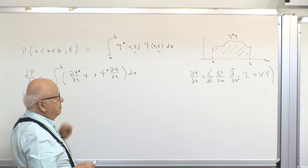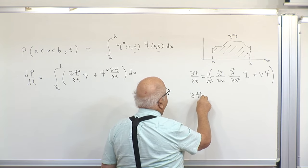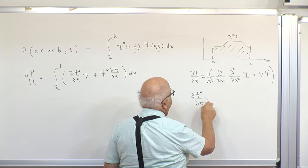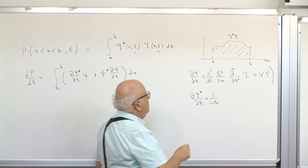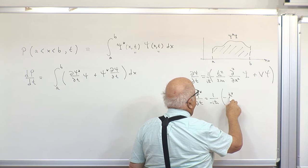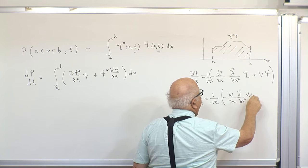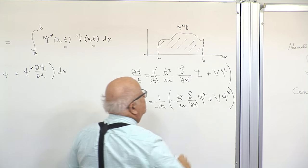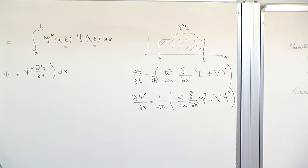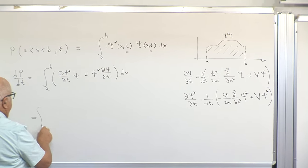So del psi over del t is 1 over i h-bar times that right-hand side. What about the complex conjugate? I take the complex conjugate of the Schrödinger equation: del psi star over del t equals 1 over minus i h-bar times minus h-bar squared over 2m times del squared over del x squared of psi star, plus V times psi star, since V is real.